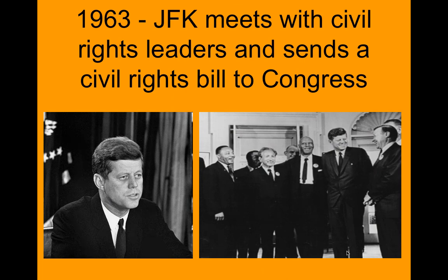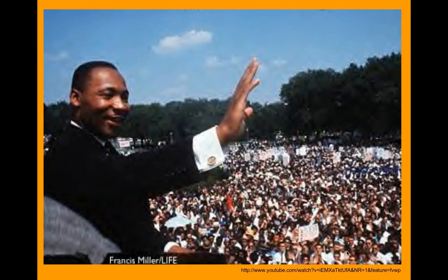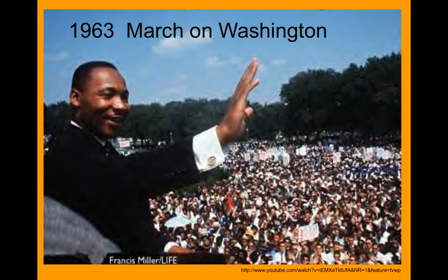Then in 1963, Kennedy met with civil rights leaders — A. Philip Randolph, Martin Luther King Jr., James Farmer — to address what was going on in the country. What they came up with was that Kennedy needed to pass a piece of civil rights legislation that would end discrimination, much like the one of 1875 that the Supreme Court ruled unconstitutional. There is a picture of Martin Luther King Jr. giving his I Have a Dream speech at the March on Washington, D.C., trying to expose the civil rights bill and get people to support it. This is the famous March on Washington.